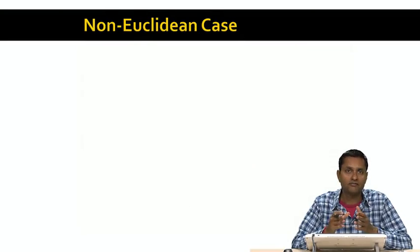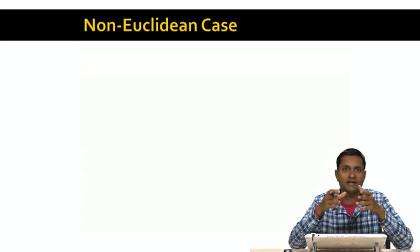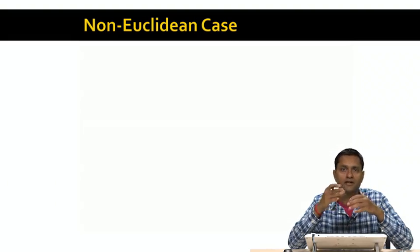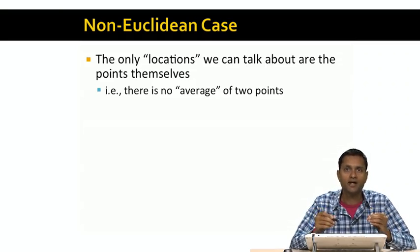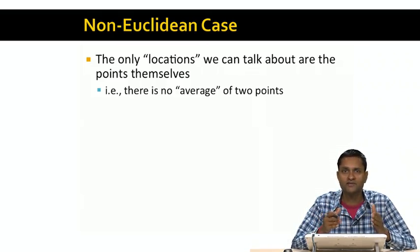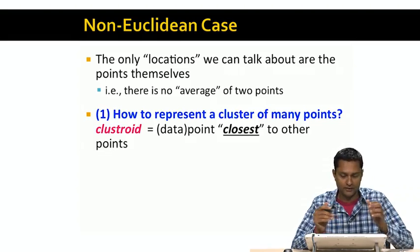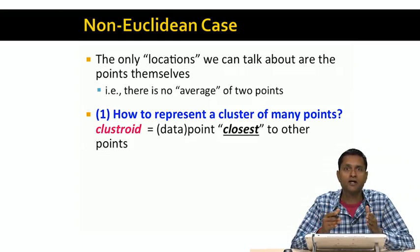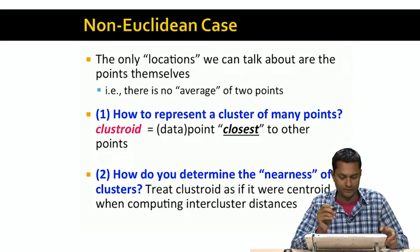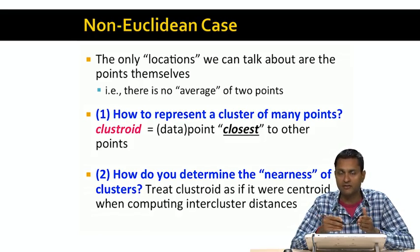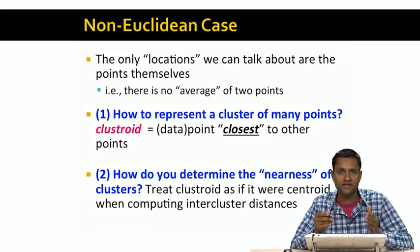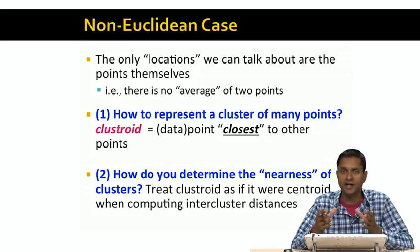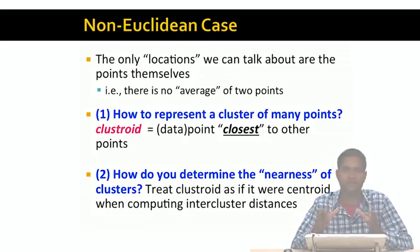That was the easy, Euclidean case of hierarchical agglomerative clustering. But what if we have a non-Euclidean space? The problem with a non-Euclidean space is that it's not possible to average points and create a centroid — the centroid may not be a valid point in the non-Euclidean space. So the only locations we can talk about are the data points themselves; there is no concept of average. Therefore, we cannot use the centroid to represent a cluster. Instead, we have to use a different concept called a clustroid, which is the data point that's closest to the other points in the cluster. Once we use clustroids instead of centroids, we can determine the nearness of clusters by measuring the distance between their clustroids.